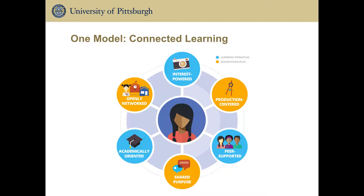One model really looks at what we call connected learning. Connected learning is a powerful tool for thinking about how we can engage the ways in which students learn in the world outside of schools and bring that into school settings. When researchers investigated how students use technology outside of classrooms, they found three guiding learning principles: students use technology to investigate things they were interested in; they used it to collaborate with peers related to that interest; and interestingly, even outside of school settings, students really enjoy working in academically rigorous environments — researching topics like environmental or political issues because that's what interests them.